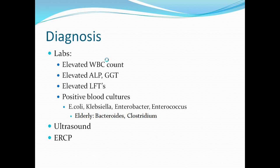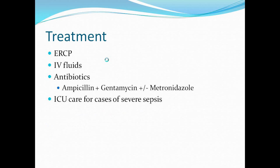The initial test is ultrasound, which will often show dilation of the hepatic ducts and an obstructive etiology. The modality of choice and curative modality is ERCP. Treatment includes ERCP, IV fluids, and antibiotics using a shotgun approach — covering gram-positives, gram-negatives, and anaerobes depending on the patient's risk factors. For elderly patients, add metronidazole for anaerobic coverage. ICU care for severe sepsis as appropriate.